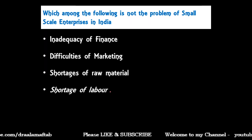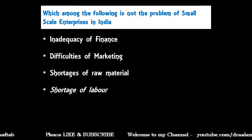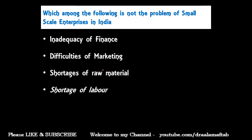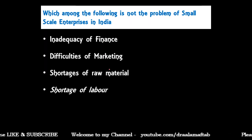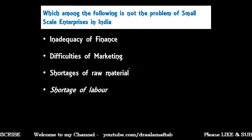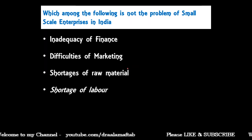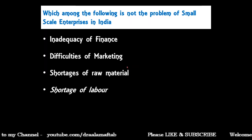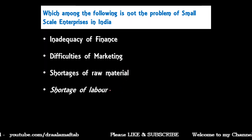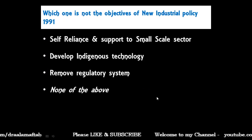The correct answer is shortage of labor — there is no shortage of labor. But inadequacy of finance, difficulties in marketing, and shortage of raw material are problems of small scale industry. There is one more problem: technological obsoleteness — old technology used by small enterprises.